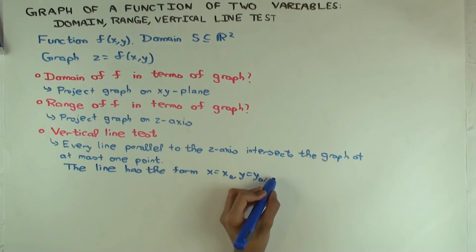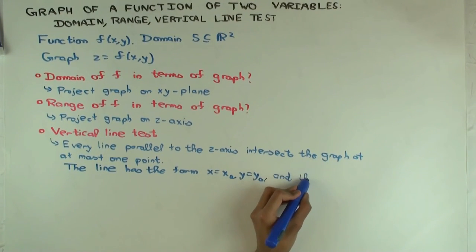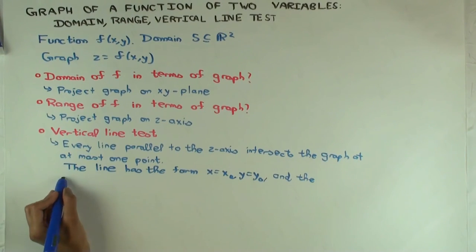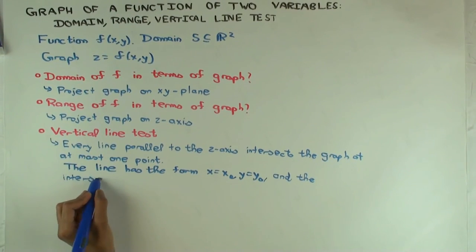And so the intersection happens. So the intersection is non-empty if and only if this point, x0, y0, is in the domain.